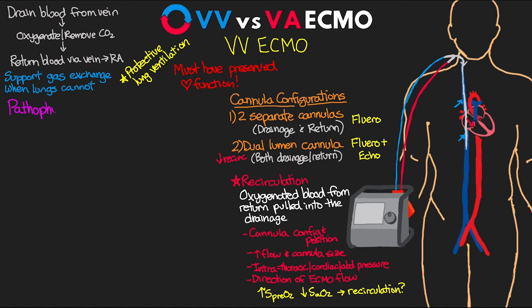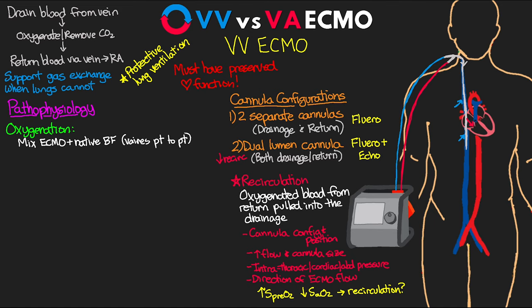Regarding oxygenation in VV ECMO, the patient's oxygenation consists of a mix of blood from the ECMO circuit and their own native blood flow — both ECMO and the patient's lung function contribute. By the time blood enters the aorta, it's essentially mixed. VV ECMO is not going to achieve normal oxygenation, but we can achieve adequate oxygenation even with no native lung function. The ECMO pump flow won't match the patient's normal cardiac output, so there's always additional native blood flow passing non-functioning lungs and mixing with ECMO-oxygenated blood, decreasing effectiveness.